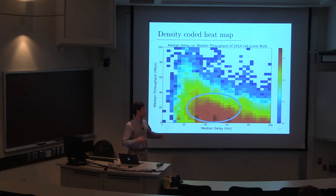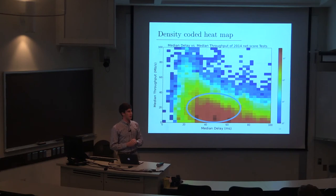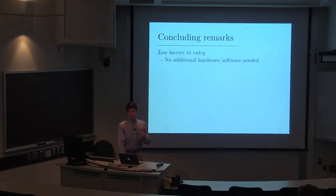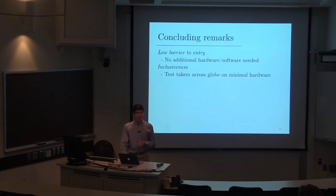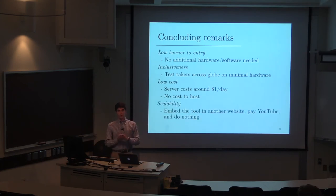All the maps shown represent people that just visited Gary's website — a real testament to Tarheel Reader's global audience. What's important is that NetScore can embed a tool in a website like Tarheel Reader and capture its users. OOKLA speed test cannot boast that — they cannot embed their tool without requiring users to select a server or download a Flash plugin. To wrap up: NetScore has a low barrier to entry with no additional hardware or software required. We're inclusive, we capture global populations on minimal hardware, server costs were only about one dollar a day to YouTube, and scalability simply requires embedding the tool in an additional website.